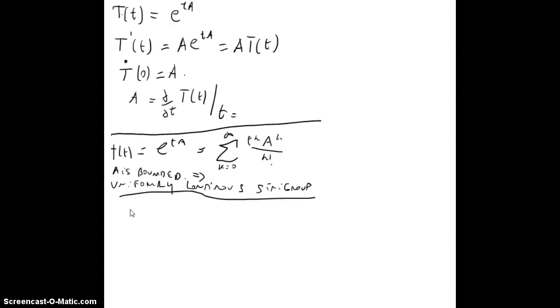Because recall that for the C_0 semigroup we needed to know that T(t)f minus f is to go to zero. But in the case of the uniformly continuous semigroup, as we did in this case, we did it in the case of matrices, in the case of Banach spaces is the same, we needed to prove something stronger that was ||T(t) - I|| when t goes to zero was zero.